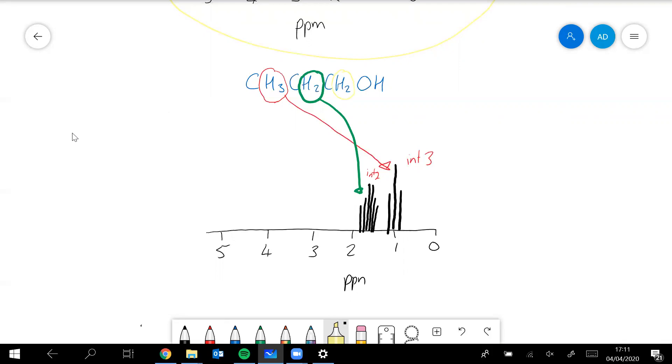What's the splitting pattern going to be? Well, carbon next door has got two, so it's going to be a triplet. So that one will give us a triplet at about four, and the integrated value of that will be two.